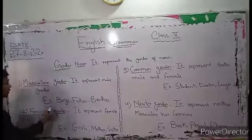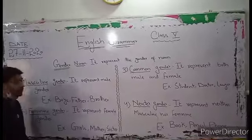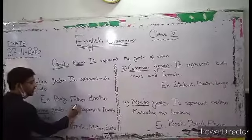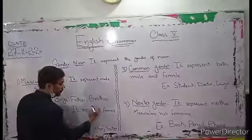For example: Boy — male. Father — male. Brother — male. These are all examples of masculine gender.